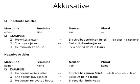This is the second slide of the topic 'Accusative.' In the previous slide we covered the definite article; in this slide we are going to cover indefinite articles and negative articles. We saw that in the previous slide, only for masculine nouns we have to change the article 'der' to 'den' when the object is used in the accusative case.